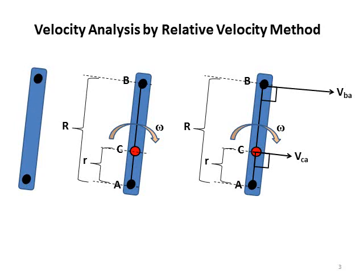On the left-hand side you can see a link with two nodes: one node and a second node. In order to find velocity at any point, we first assign notations to each point. This point is represented by capital A, and this node by capital B. If you are interested in finding velocity at any other point on this link, you can do so — we label that point capital C.